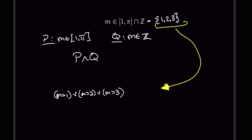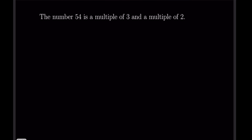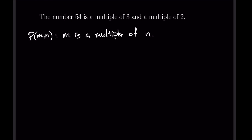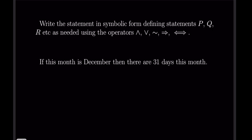Next: '54 is a multiple of 3 and a multiple of 2.' A nice way to handle this is with a two-variable open sentence. Let P(m, n) be the statement 'm is a multiple of n.' Then what we really have is '54 is a multiple of 3 AND 54 is a multiple of 2,' which we write as P(54, 3) ∧ P(54, 2).